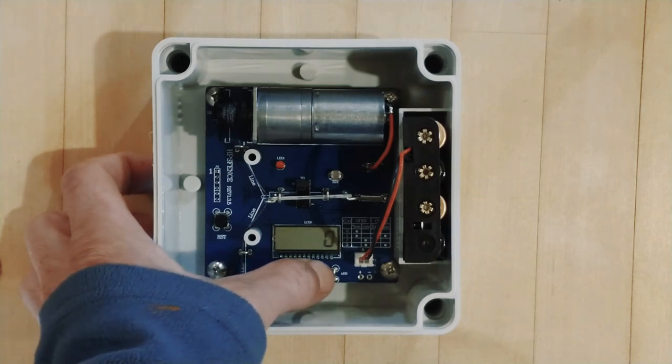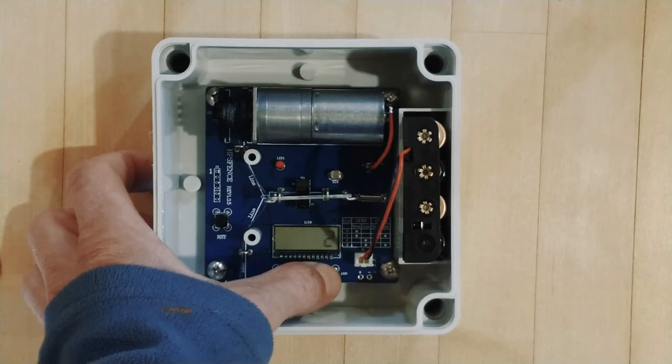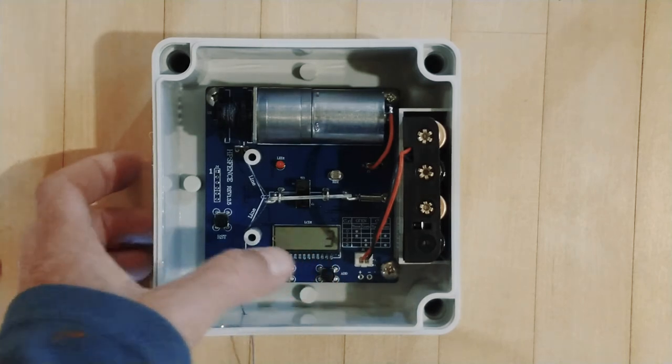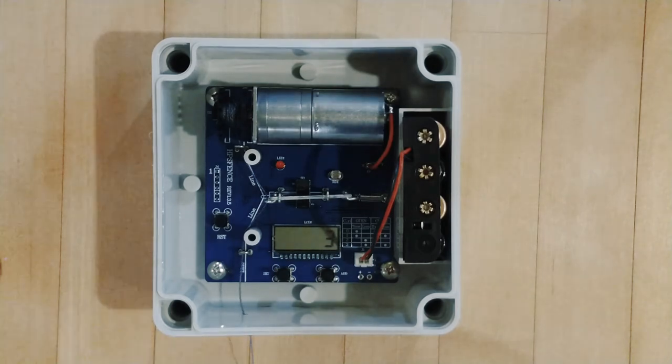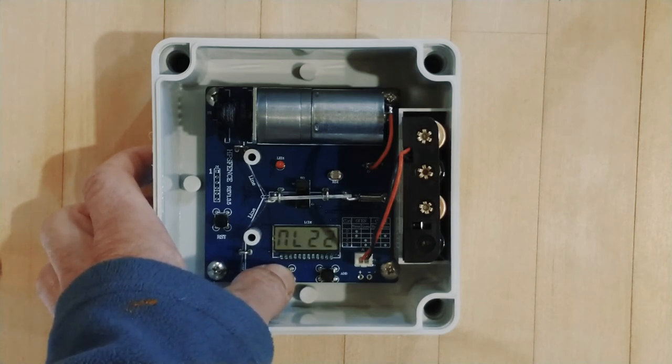Control. It's at zero. Zero is timer and timer, timer open, timer close. One is timer open, light close. Two is light open, timer close. And three is light open, light close. So we want to set it on three for now because it's easiest to test it that way. We can use the light, block the light sensor and we can watch the door go up and down, which is what we want to do to make sure everything's going well.